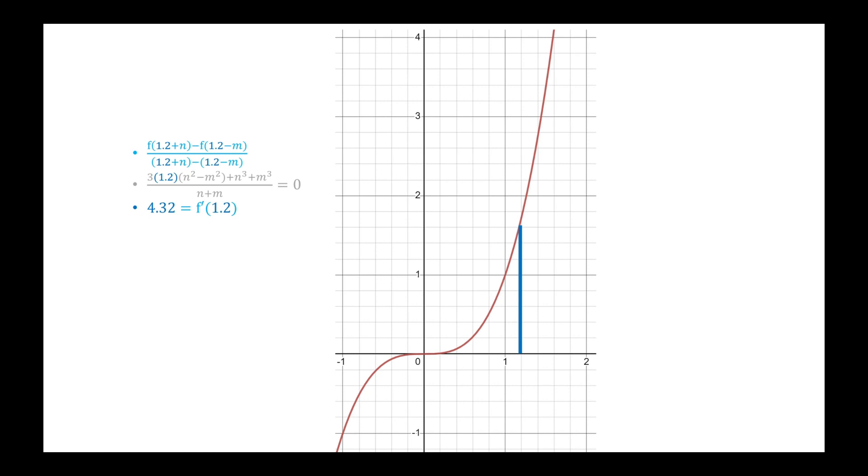Now let's say we want to find a parallel secant to this tangent line. Well first we're going to choose some m or n, I'm just going to choose an m of 0.4 over here, and using the auxiliary equation, we can find a corresponding n, which represents some distance in the other direction, which allows us to make the parallel secant.